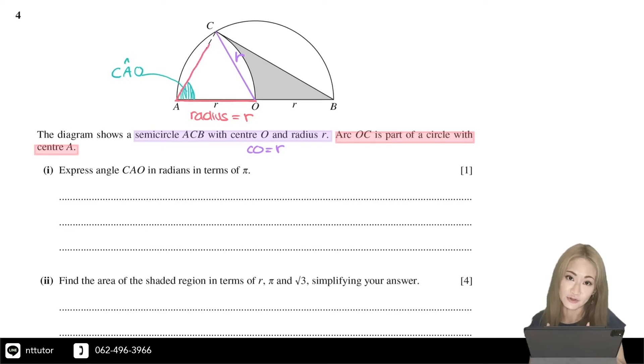then AC is also the radius of that circle with center A. Therefore, AC must also be equal to R.